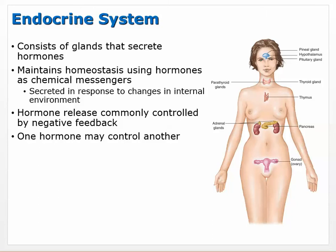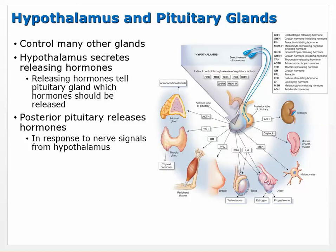The endocrine system as a whole consists of glands that secrete hormones. These endocrine glands are scattered throughout the body and are primarily controlled from the brain by the hypothalamus, which communicates with the pituitary. The pituitary then communicates with the thyroid gland or the adrenal glands, forming that hypothalamic-pituitary axis. The idea is to maintain homeostasis using hormones as chemical messengers through negative feedback, and one hormone may control another because the hypothalamus secretes releasing hormones, which prompt the pituitary to release its own hormones.